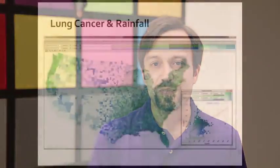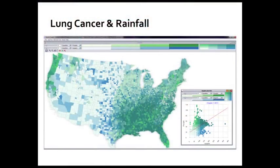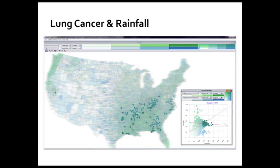Another more serious pattern that we've explored at Penn State is the correlation between lung cancer mortality and mean annual precipitation. Looking at a bivariate choropleth map, the dark places are high in both variables — high in precipitation and high in lung cancer mortality. This pattern was originally discovered by Dan Carr from George Mason University, who was looking at covariates to see if anything explained patterns of high mortality. Filtering the map to show only places high in both variables reveals many counties in the deep south of the United States, along the Mississippi River, that are high in both.